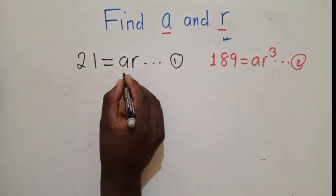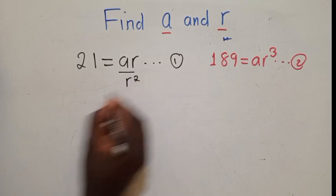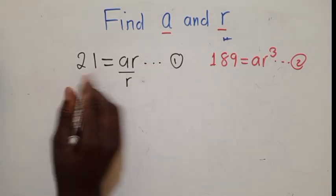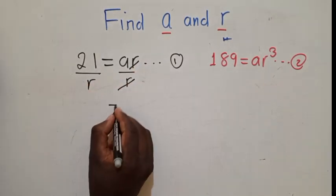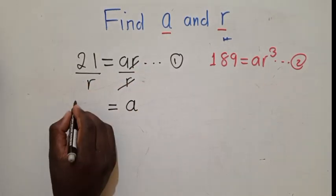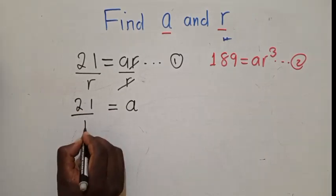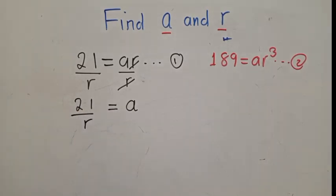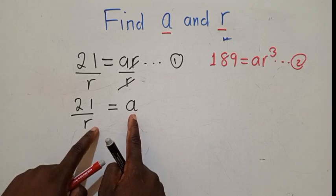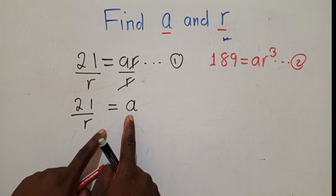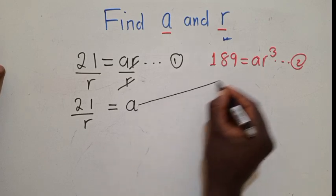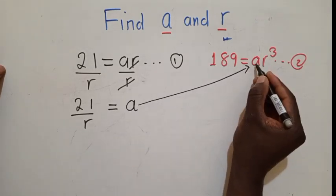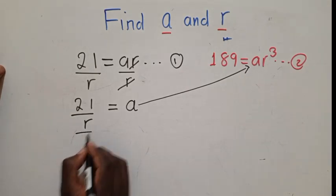So in this case, I'll divide by r. So this r and the r will go. I shall remain with a equals 21 over r. In other words, I'm just making a subject of the formula. So when you make a subject of the formula, you go to the other equation. You substitute where is a.